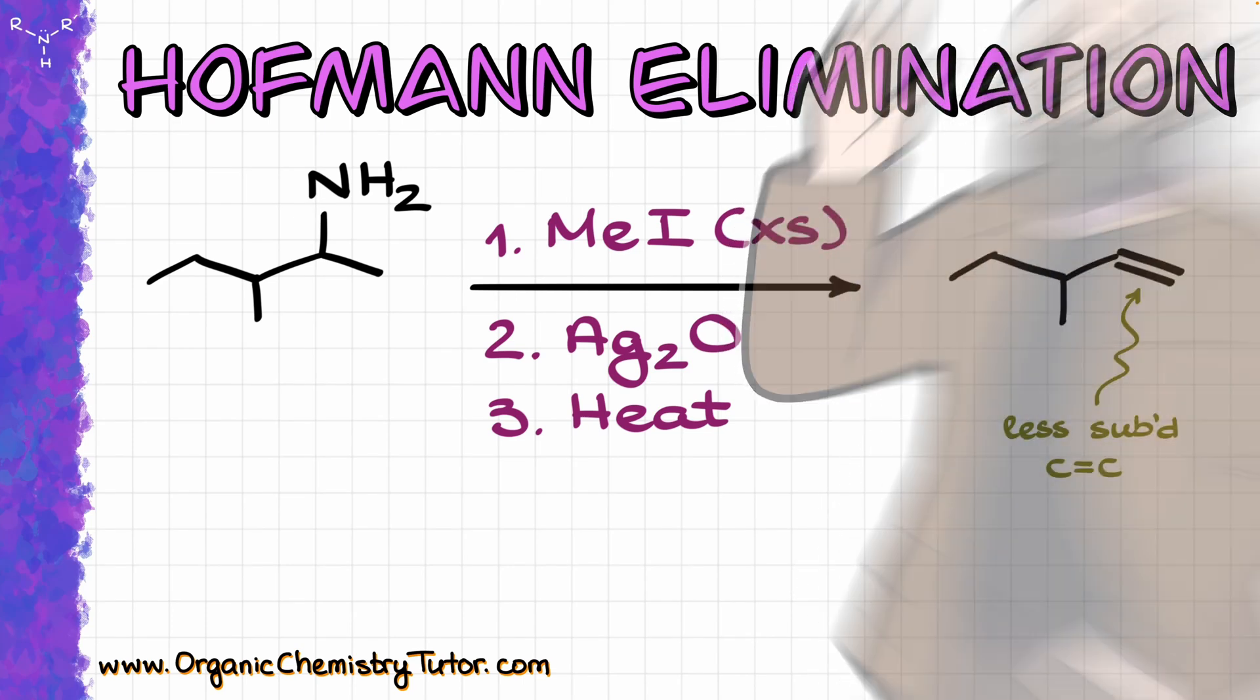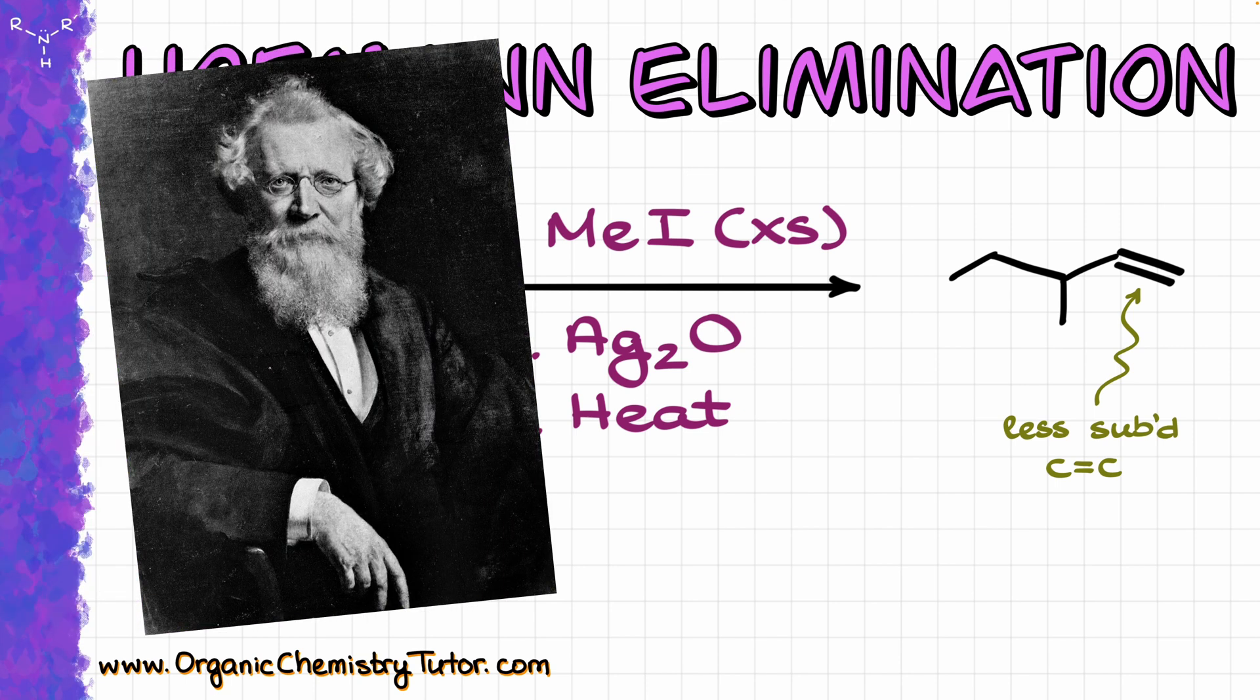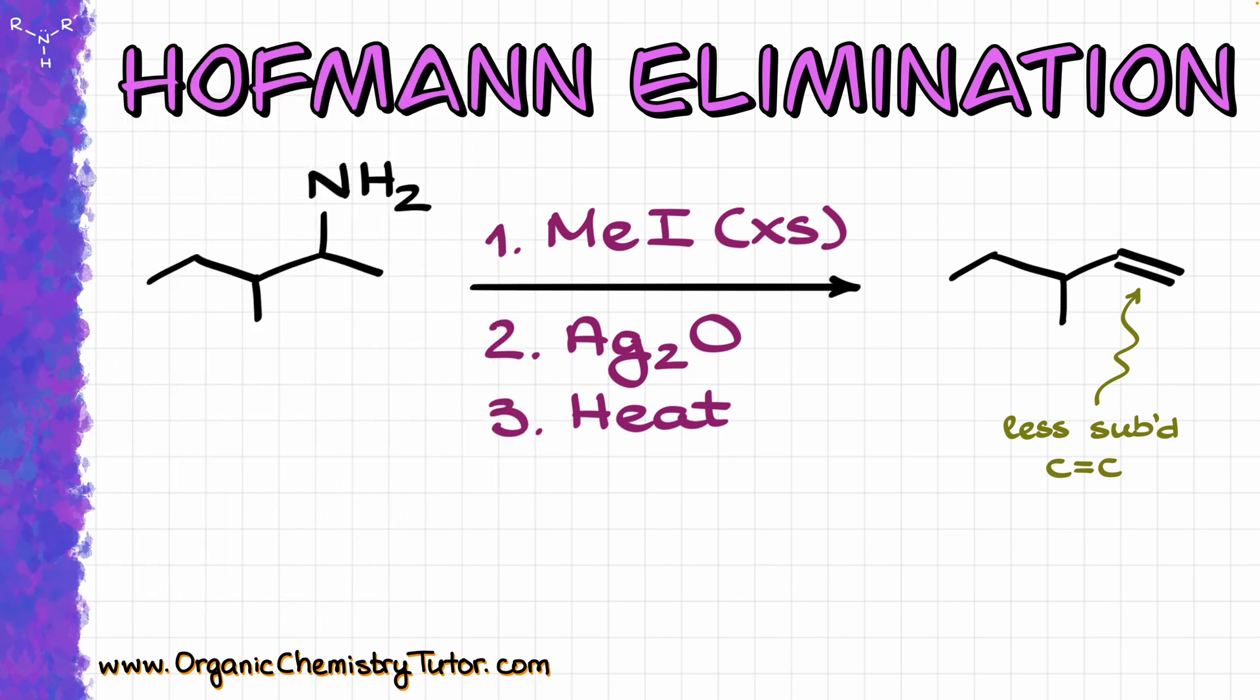Hey everyone, Victor is here, and in this video I want to talk about yet another reaction bearing the Hoffman's name, the Hoffman elimination. August Wilhelm von Hoffman was an extraordinarily prolific 19th century German chemist, and his name pops up left and right when it comes to the classic chemistry of nitrogen-containing compounds.